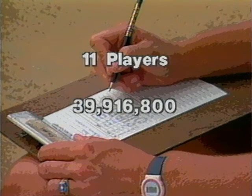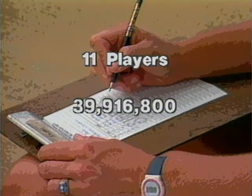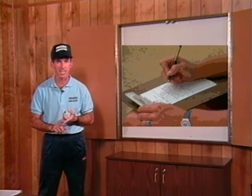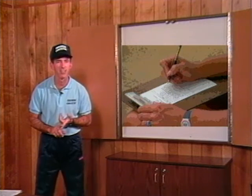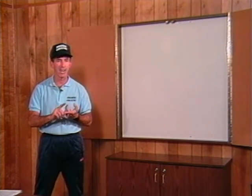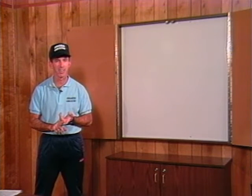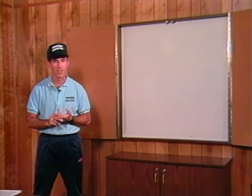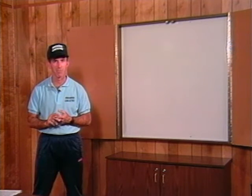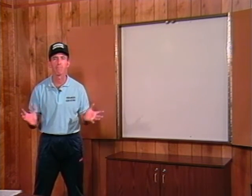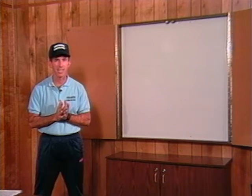Let's go back to the slow-pitch situation where we talked about 39-plus million. There are only a few over 31 million seconds in a year. So you can make one different batting order every second for a year and still not get through all the possible batting orders for a slow-pitch softball team using an extra player. That's how mind-boggling and complex strategy can get.